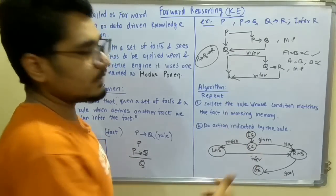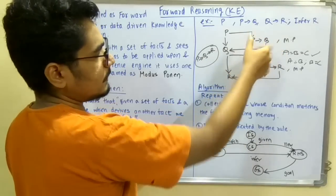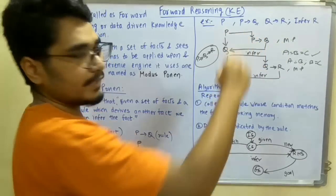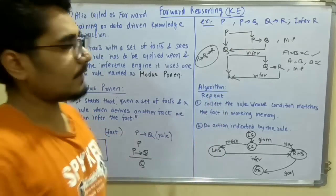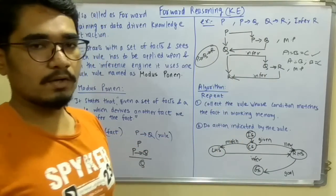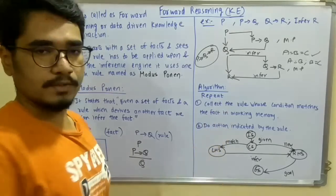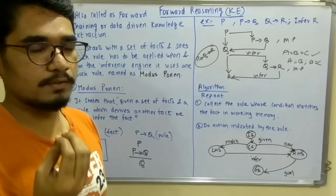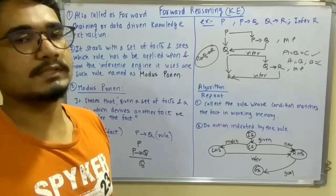You have to do the action indicated by the rule. Whatever action is there, you perform it—if P derives Q, then you can infer Q. You have to add or delete your fact in the working memory until you reach a particular solution to your problem or no such condition is met.